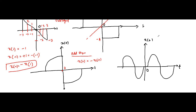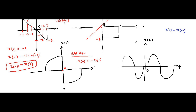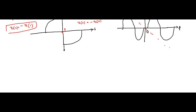For odd signals the expression is x(t) = minus of x(-t). In case of even signals it was x(t) = x(-t) — that minus is not present for even signals. The sine wave, the sinusoidal signal, is also an example of an odd signal because it is exactly symmetrical about the point of origin. So these are the basic things for even and odd signals.